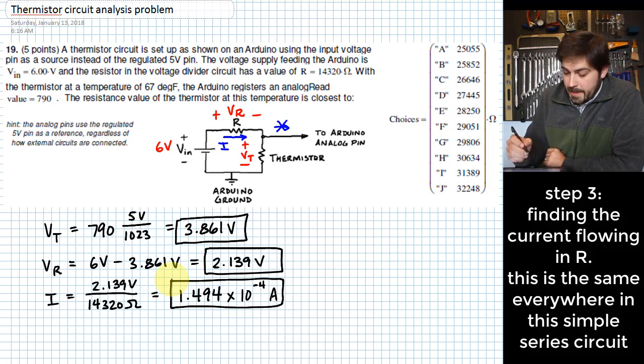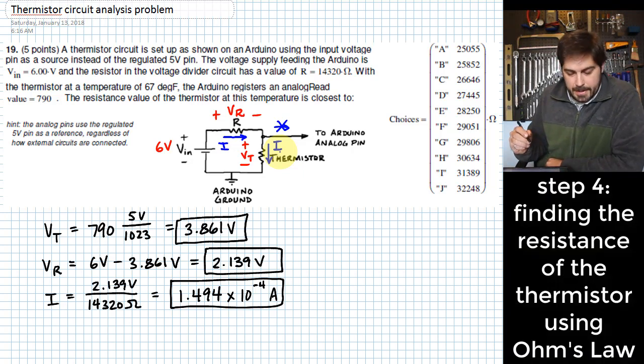And as I mentioned, that is the same current that has to flow down here through the thermistor. There really is no other place for current to go. It has to be the same everywhere in this loop. And so I'll take that current, and since I know the voltage across the thermistor, if I take that voltage and divide by the current, it gives me the resistance of the thermistor.